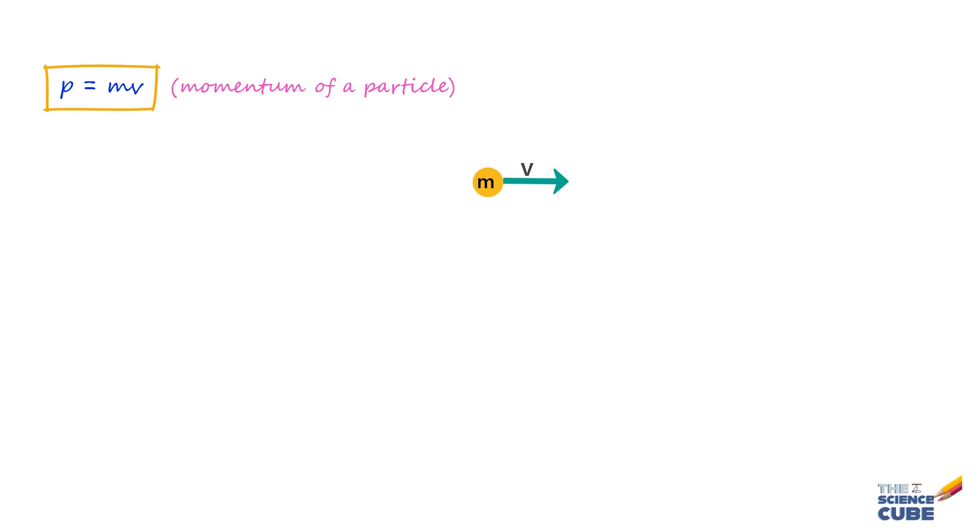Since mass M is always a positive quantity and a scalar, on the right hand side we are left with one vector quantity only and that is the velocity vector. Therefore, we can say that the momentum P has the same direction as velocity V.